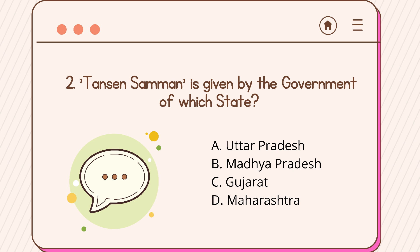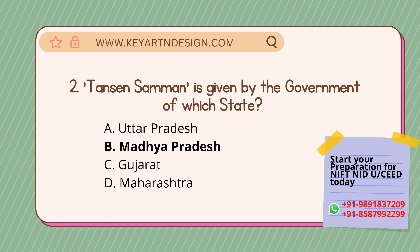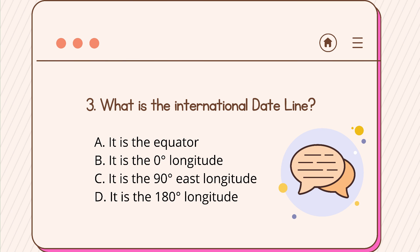Question number two: the Padma Samman is given by the government of which state? Option A: Uttar Pradesh, Option B: Madhya Pradesh, Option C: Gujarat, Option D: Maharashtra. The correct answer is Option B, Madhya Pradesh.